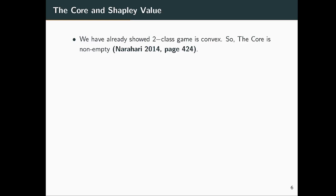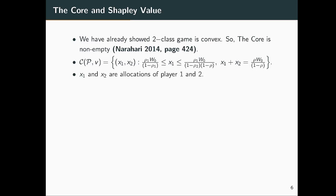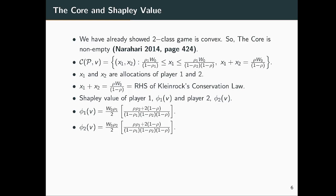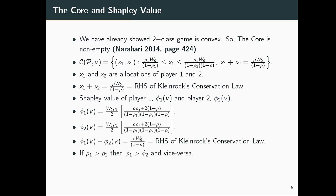We are solving this game using the core and Shapley value. Since the two-class game is convex, the core is non-empty (see Narahari 2014, page 424). From the core expression, x1 and x2 are allocations for player 1 and player 2, and their sum equals the right-hand side of the Kleinrock conservation law. The Shapley values phi_1 and phi_2 also sum to the right-hand side of the conservation law. If rho_1 > rho_2 then phi_1 > phi_2, meaning higher load players are penalized more.